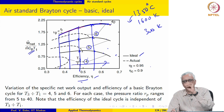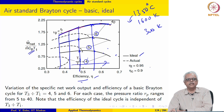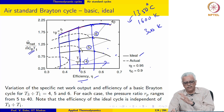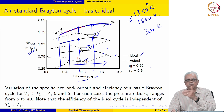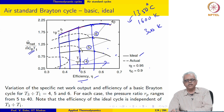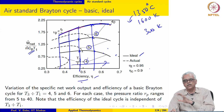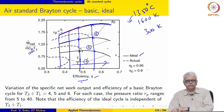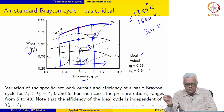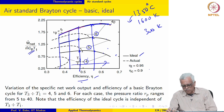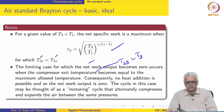That is the pressure ratio at which we would ideally like to operate, where the efficiency is high and the specific work is the highest possible for the given value. These are insights we are getting from the air standard analysis, and that was the objective we started out with when we began discussing the air standard cycle.